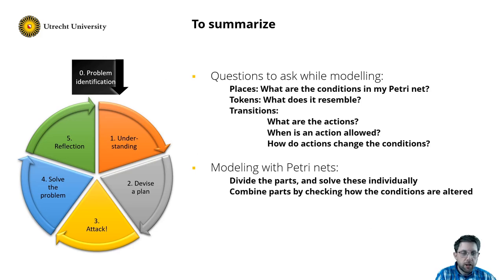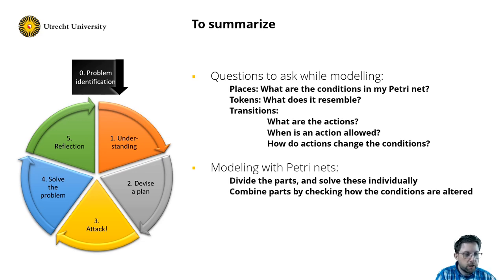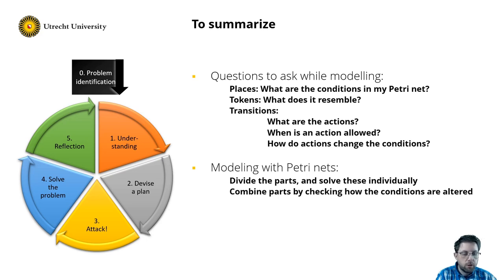So to summarise. In this clip I showed you how you can model with Petri Nets. While modelling, ask yourself the following questions: what are the conditions in my net? These become places. What do the tokens resemble? And for the transitions you need to ask yourself: how are the conditions changed? Which actions are there? When is an action allowed? And if the action is executed, how does it change the conditions? Moreover I showed you how the reflective modelling cycle can help you in dividing the problem into smaller parts and solve these individually using Petri Nets. After solving the smaller parts, you need to think of how to combine these — for example by checking how the actions in one part alter the conditions of the other parts. Good luck modelling!